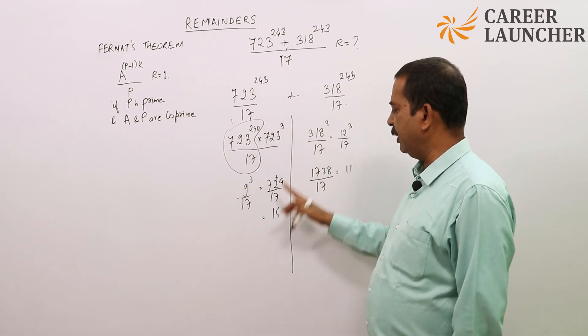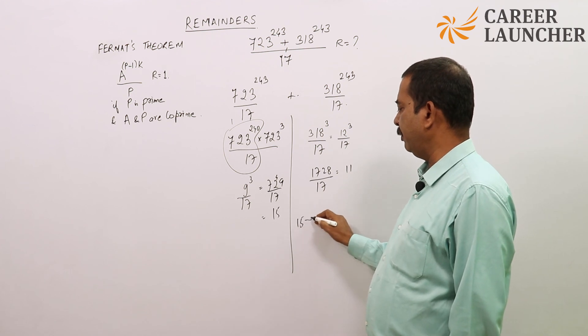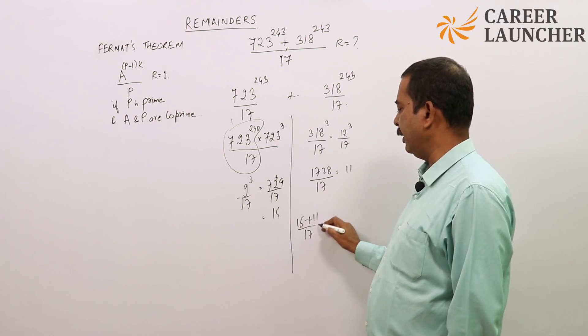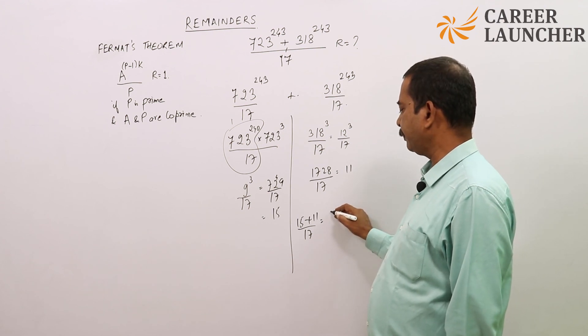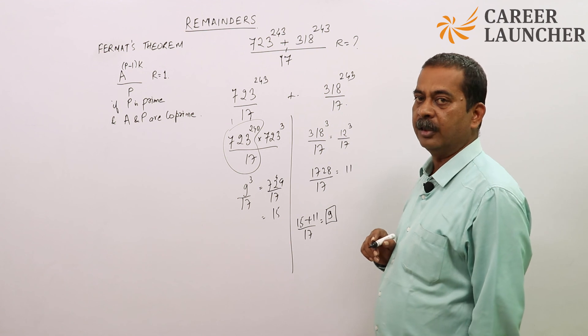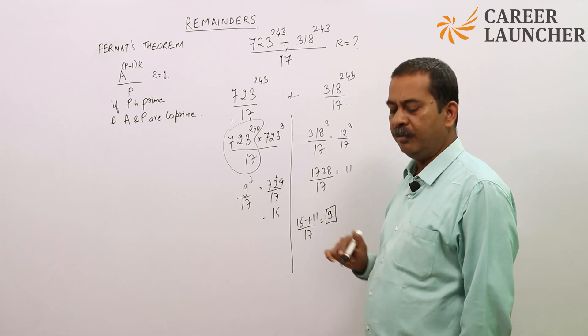This part the remainder is 15, this part the remainder is 11. So final remainder will be 15 plus 11 divided by 17, which is 26 by 17. The final remainder comes out to be 9. That is the answer for this. Application of Fermat's theorem specifically.